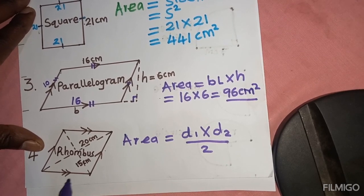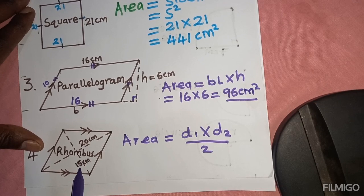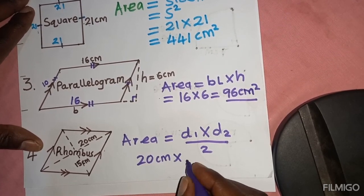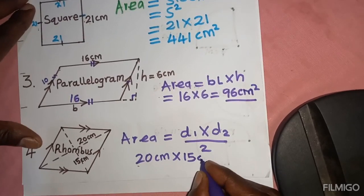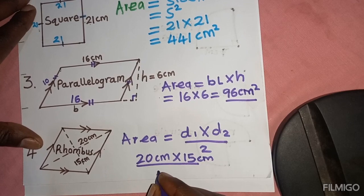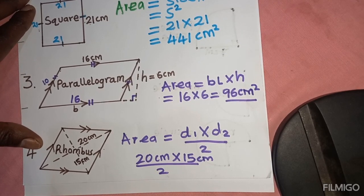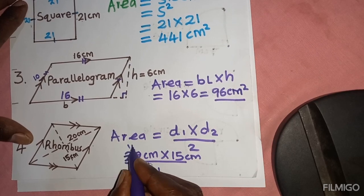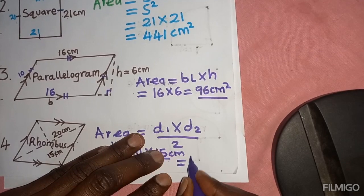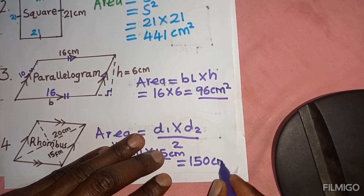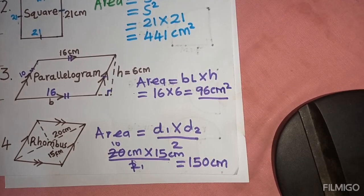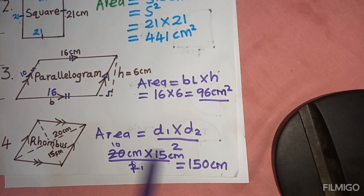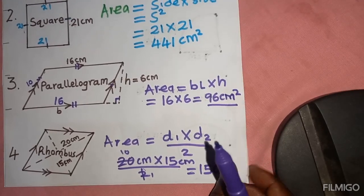Here we are supposed to say our first diagonal is 20 centimeters and the other is 15. So we say 20 times 15, divided by 2. We can simplify: 20 divided by 2 gives 10, then 10 times 15 gives 150 square centimeters. That is the area of that rhombus.